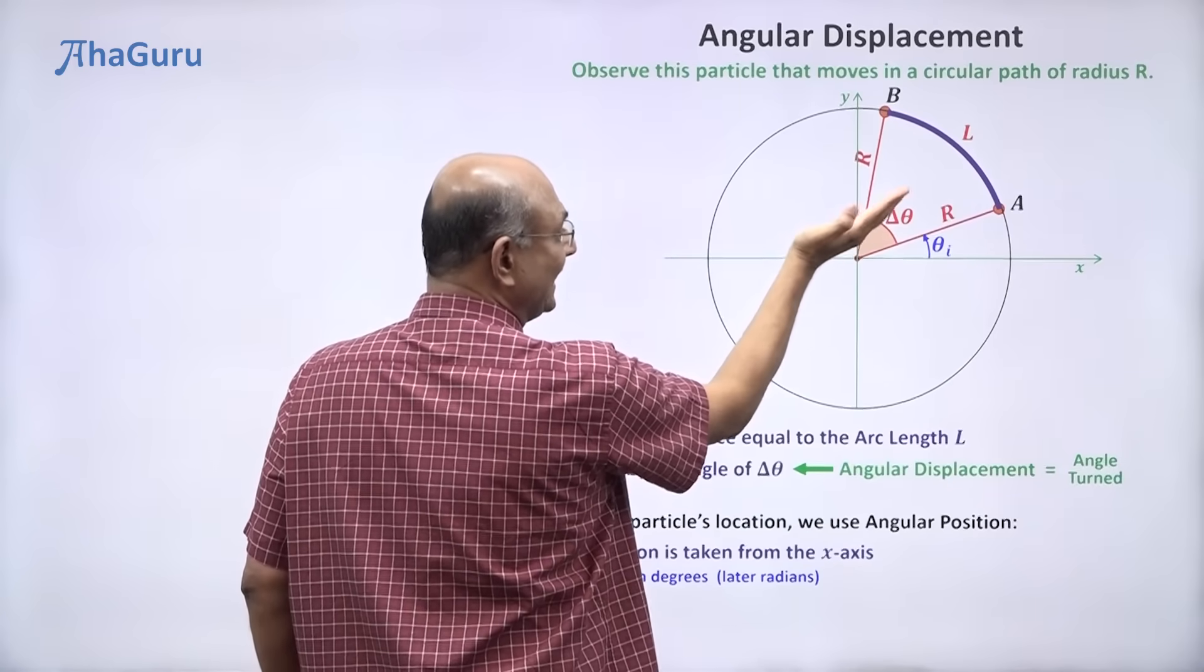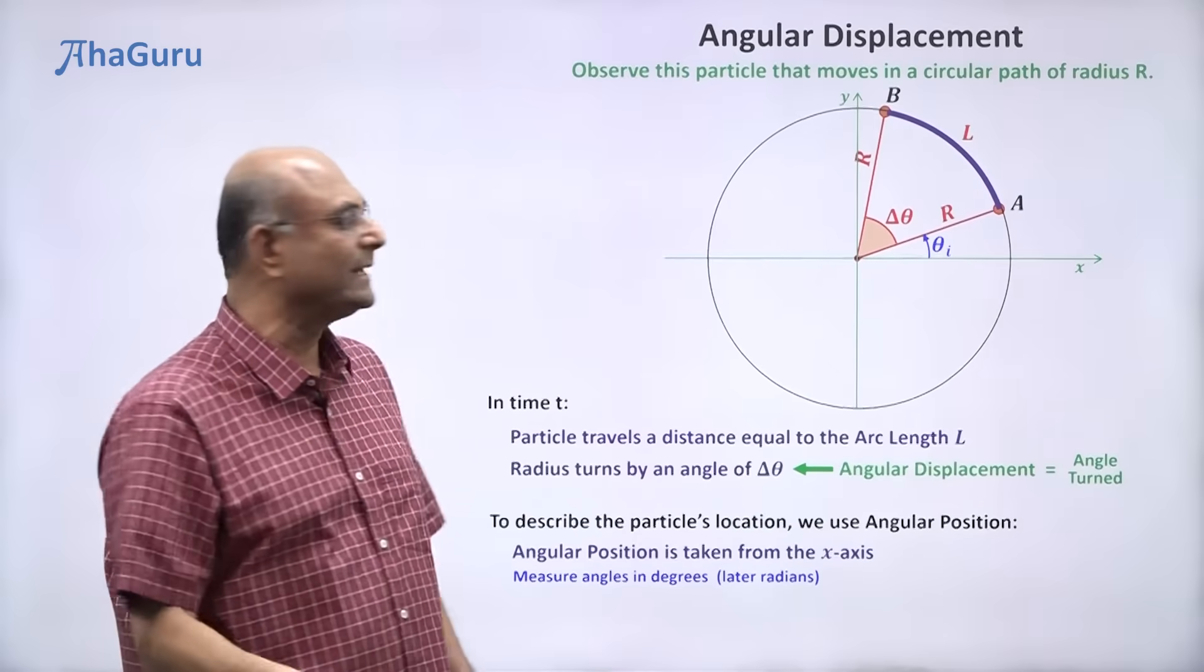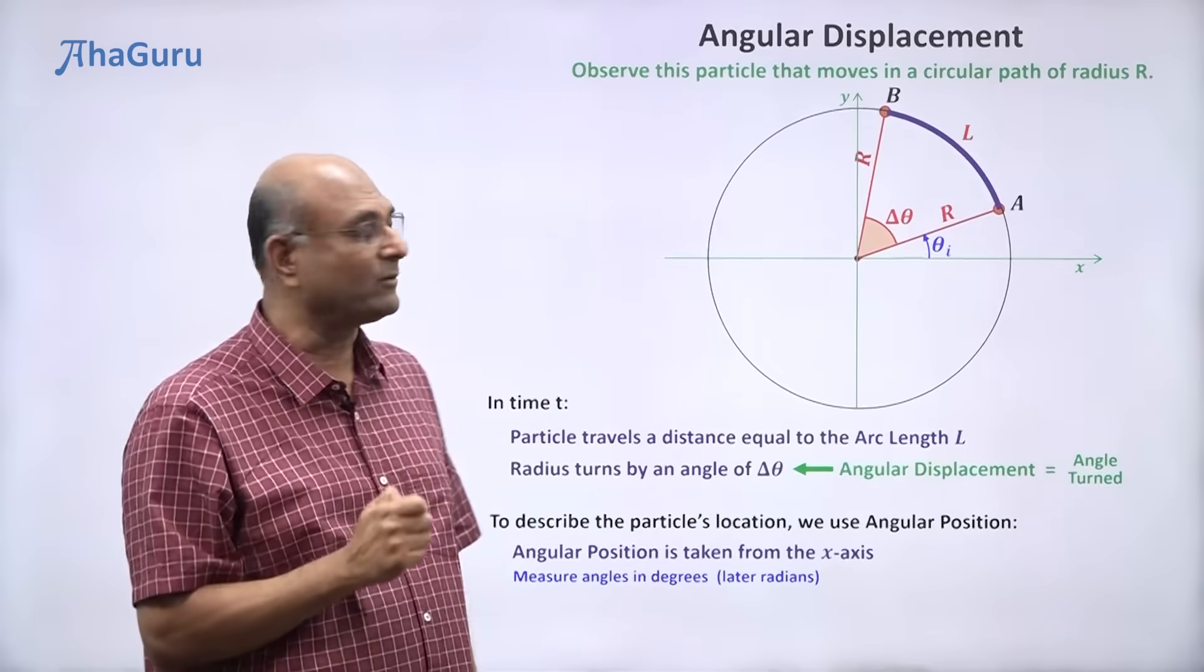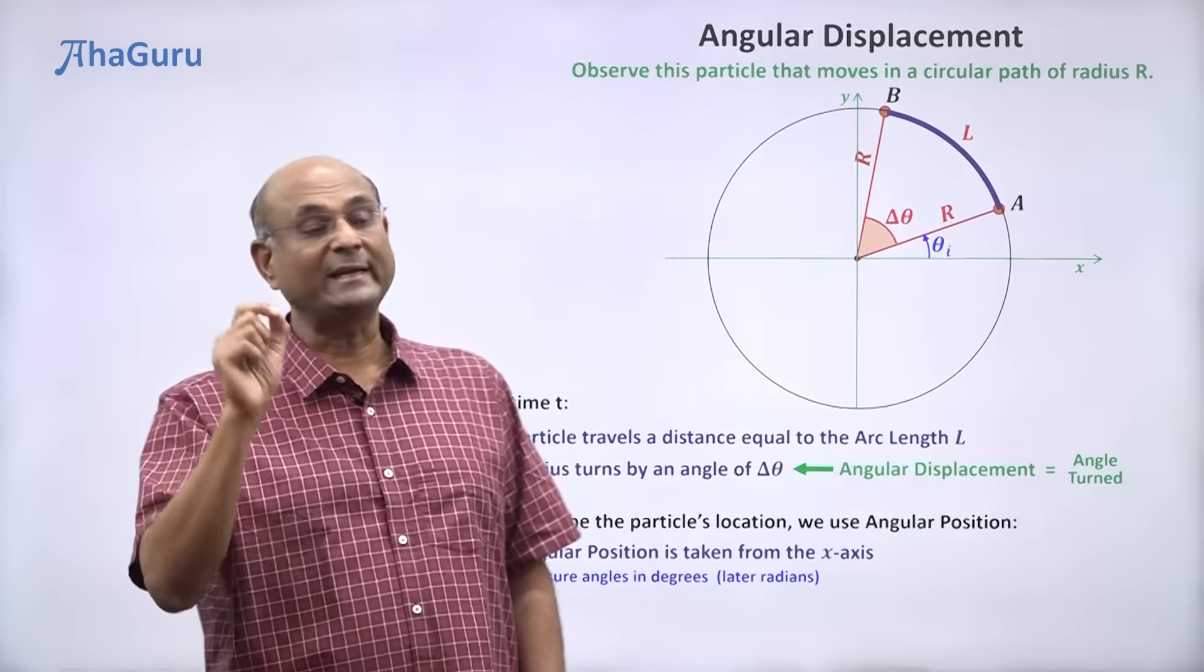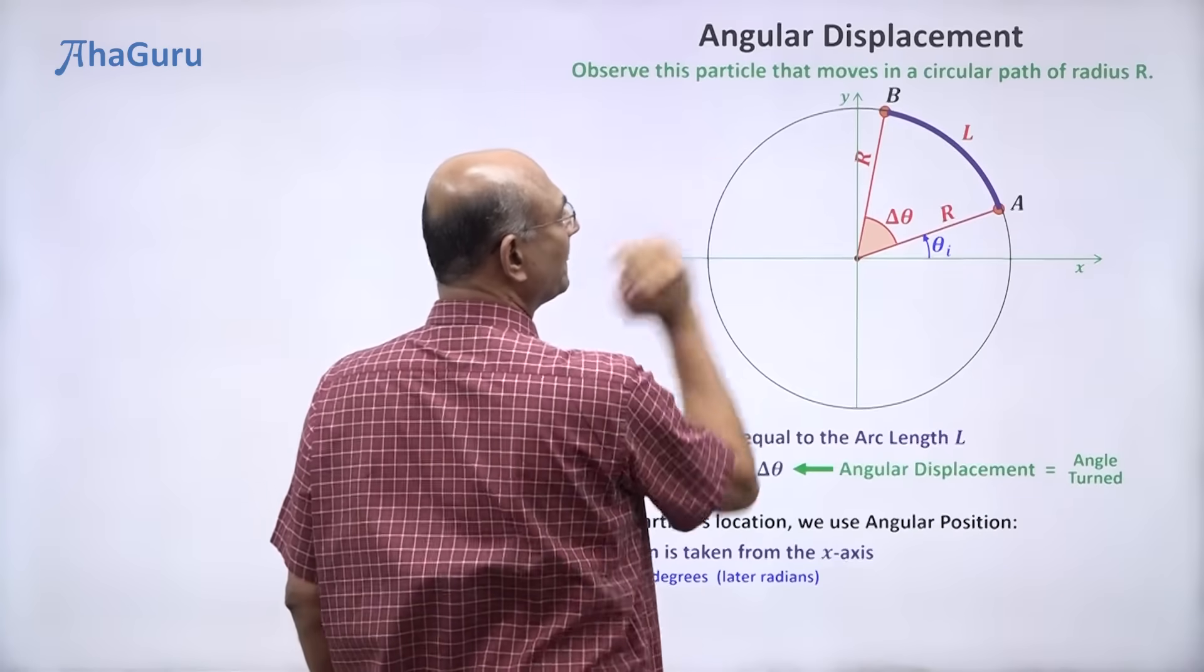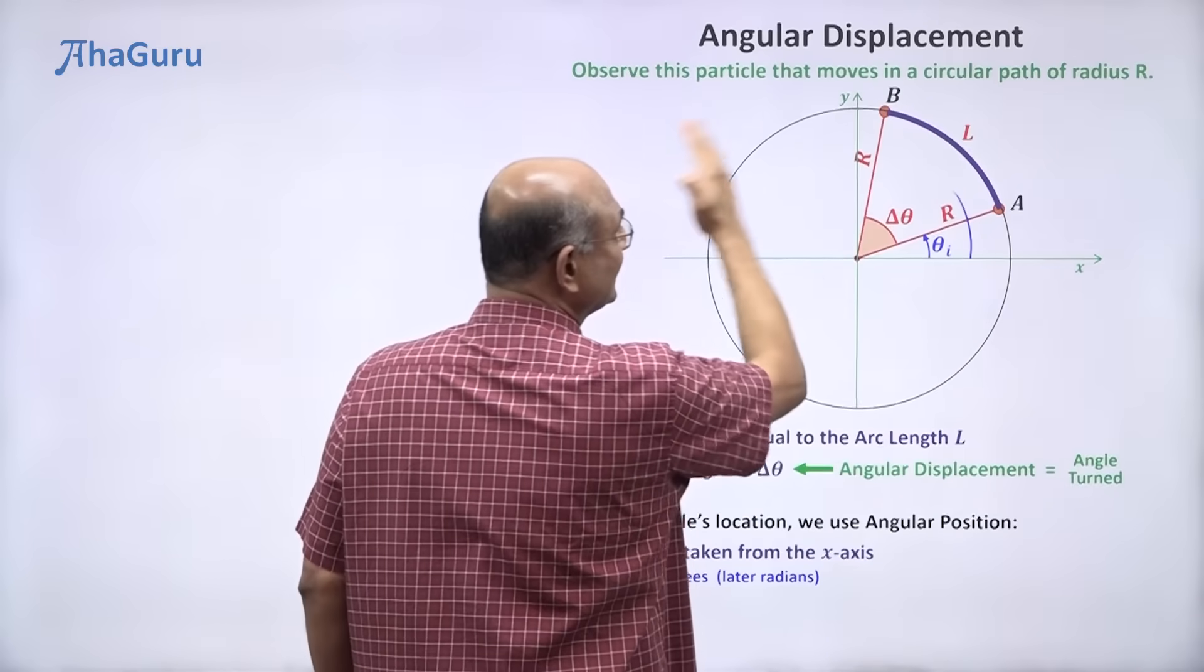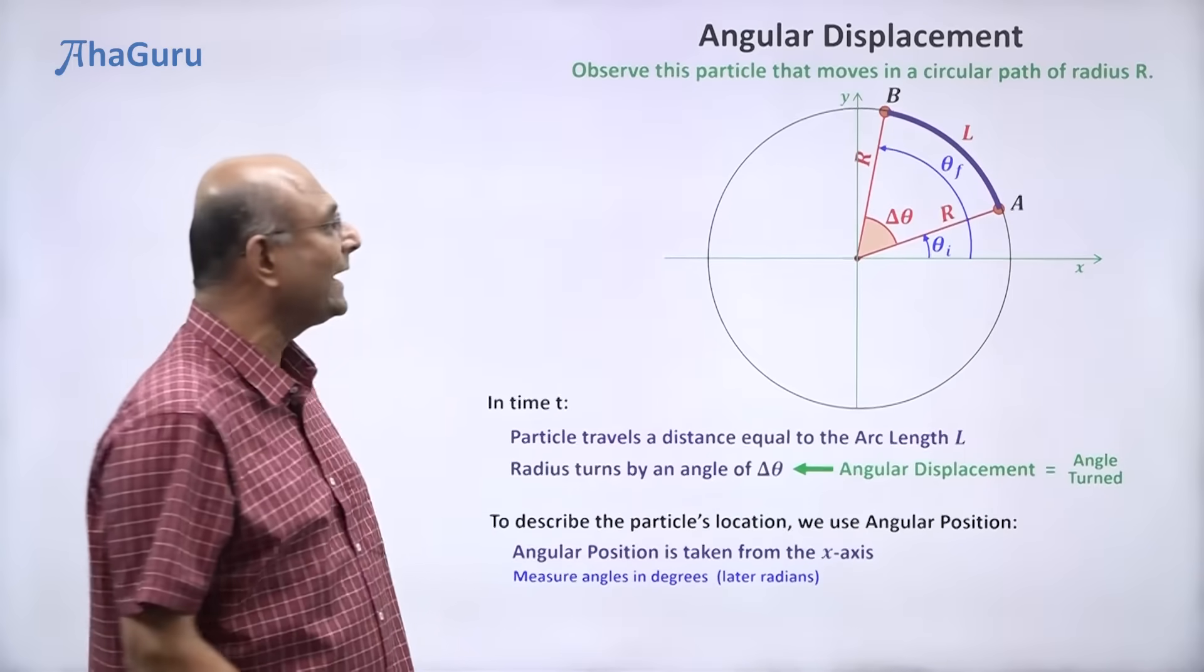So that is theta i. So maybe theta i is 30 degrees. So you can say a's position, initial position of the particle is 30 degrees. Now b, which is the final position, again you measure from the x axis like that. So we will say theta f. So b's position is theta f.